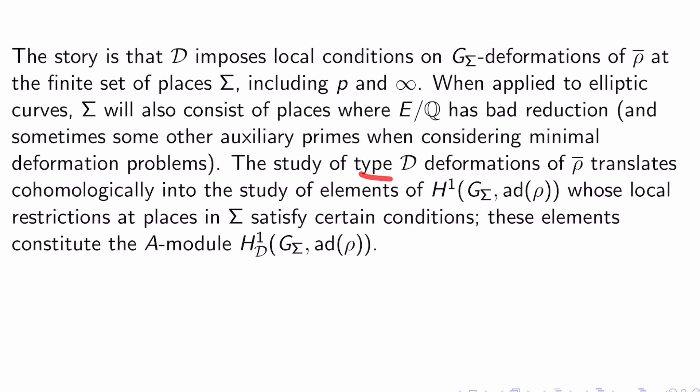The study of type D deformations of rho bar translates cohomologically into the study of elements of H^1(G_sigma, ad(rho)). So this is the Galois cohomology side of the argument, whose local restrictions, restrictions to each place in sigma satisfy certain conditions. These elements constitute the A module H^1_D(G_sigma, ad(rho)) rather than just H^1(G_sigma, ad(rho)). So this is what we mean by like a type D cohomology groups.